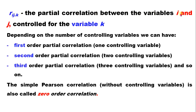The partial correlation between variable I and J is controlled for variable K. Depending on the number of controlling variables, we can have different orders. First order partial correlation uses one controlling variable. Second order partial correlation uses two controlling variables. Three controlling variables gives third order partial correlation. Without any controlling variable, it is called zero-order correlation.